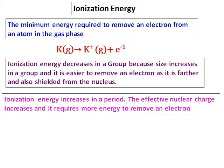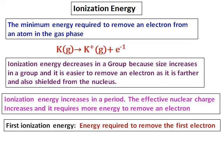However, in a period, the size decreases and the effective nuclear charge increases. Because of this, in order to overcome the pull given by the nucleus, we need to put in more energy. Hence, the ionization energy increases in a period.